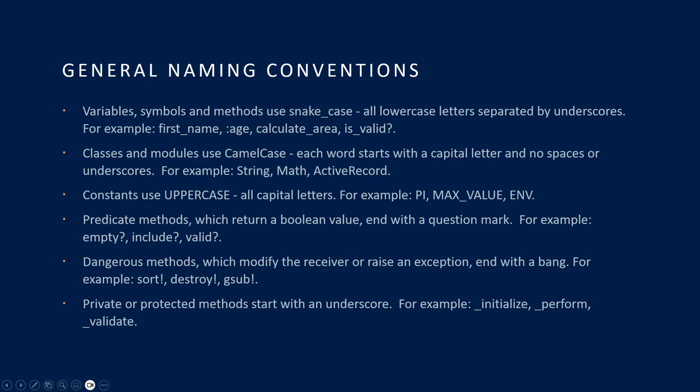Classes and modules use CamelCase — each word starts with a capital letter with no spaces or underscores. For example: String, Math, ActiveRecord. Of course, if you've only got one word, in camelCase it's just one word with the first character capitalized. Constants use uppercase, all capital letters, and you can see some examples there.